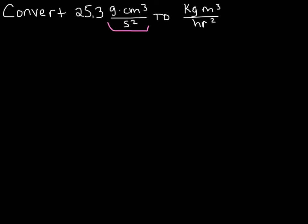How do we start these? Basically, we're going to do the same thing we have been doing, and that is just write down what we're starting with. We're going to convert each one of these units individually, one at a time — so it's not as bad as it looks. Let's write down 25.3 grams times centimeters cubed over seconds squared.